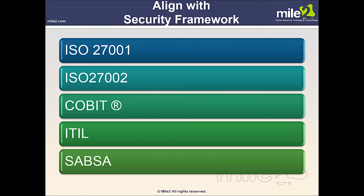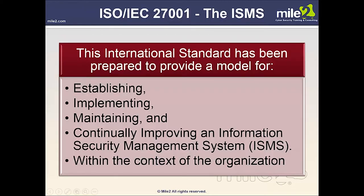COBIT stands for Control Objectives for Information and Related Technology — a framework created by ISACA for IT management and IT governance. It's a supporting toolset that allows managers to bridge the gap between control requirements, technical issues, and business risk. ITIL, formerly Information Technology Infrastructure Library, is a set of practices for IT Service Management (ITSM) that focuses on aligning IT services with the needs of the business. SABSA is a proven methodology for developing business-driven, risk- and opportunity-focused security architectures at both enterprise and solutions level, also used for information assurance architecture and risk management frameworks.